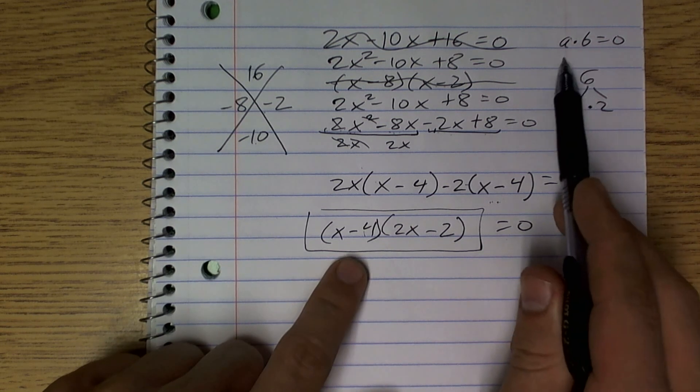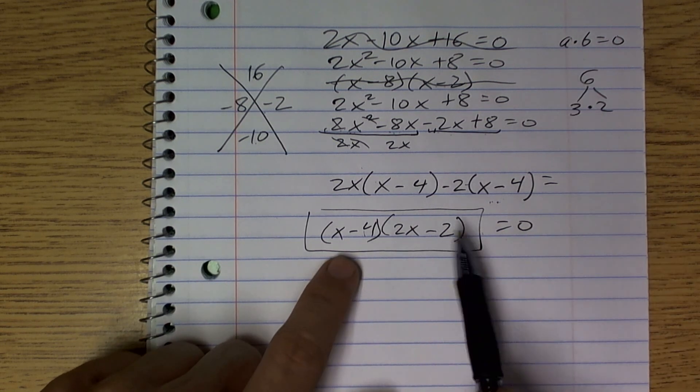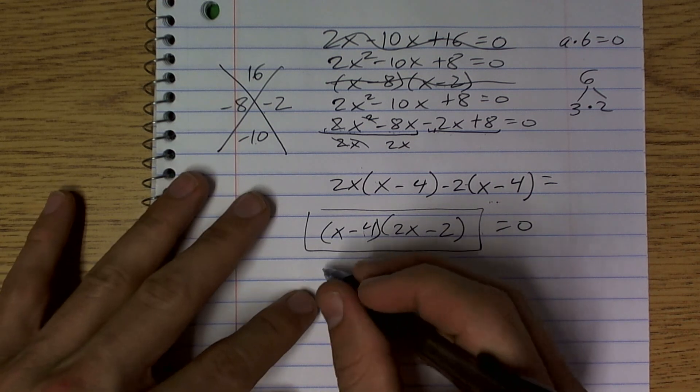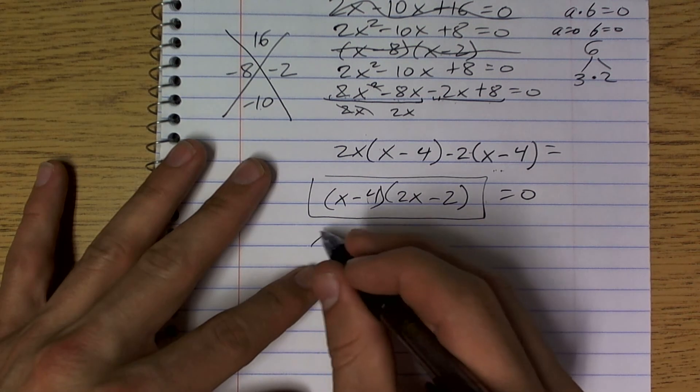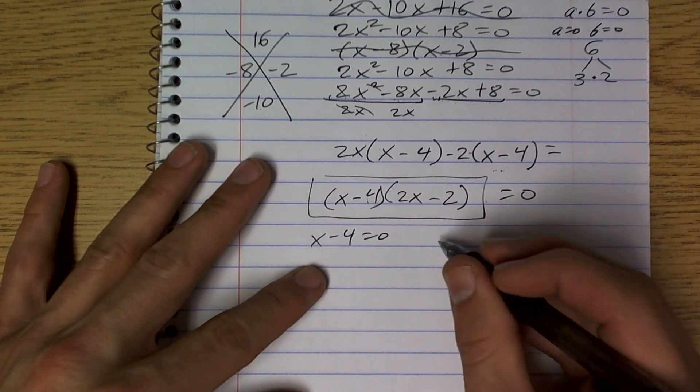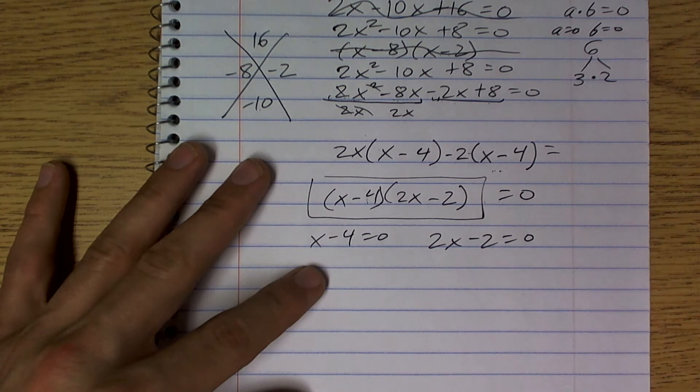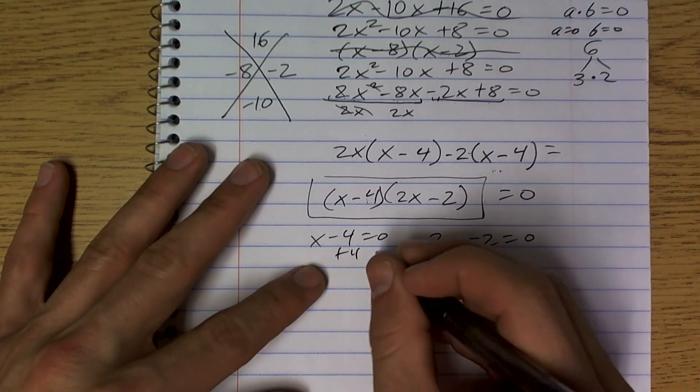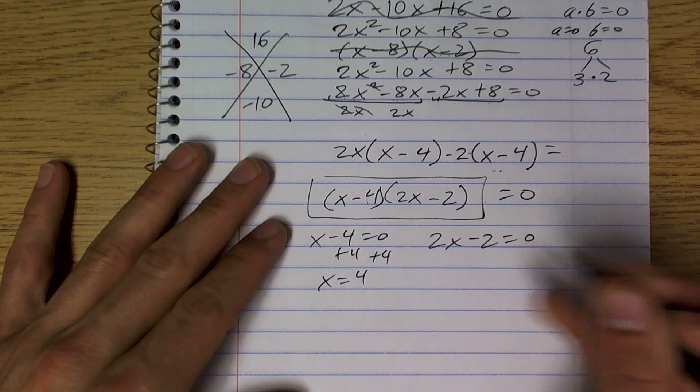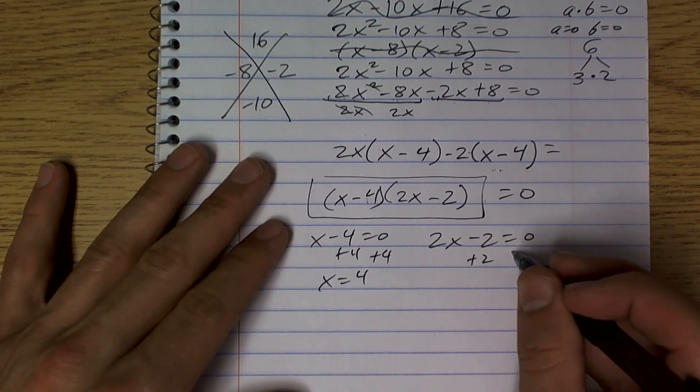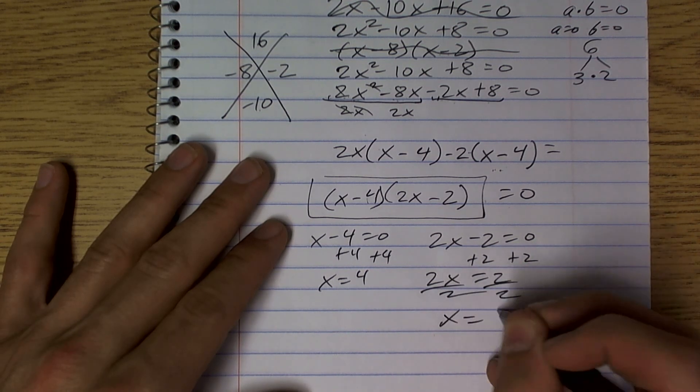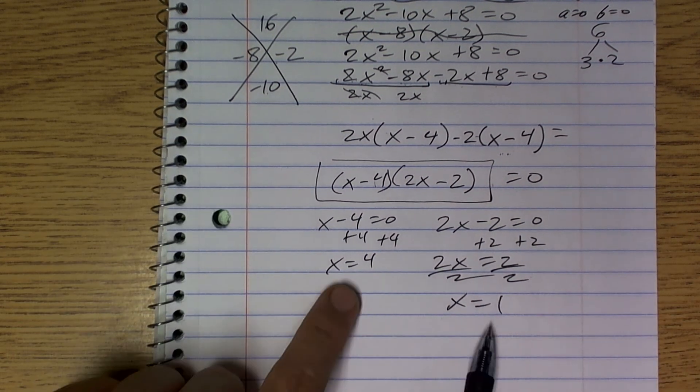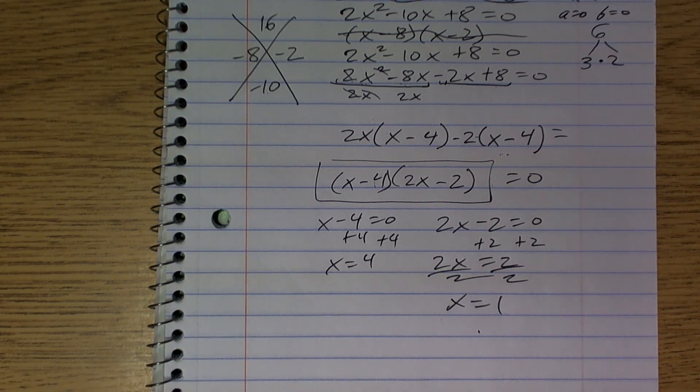So now I have this as a times b equals 0, right? A times b equals 0. So therefore, I can say that either a equals 0 or b equals 0. So now we can simply just write x - 4 = 0 or 2x - 2 = 0. So now I'll just add 4, x = 4, or here I can just add the 2. So I get 2x = 2 divided by 2, x = 1. So therefore, those are your two answers. Make sense?